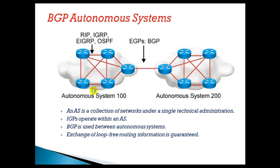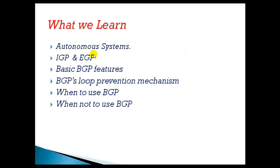Finally, we have seen some of the basic concepts of BGP. Initially we started with autonomous system numbers — a number which identifies an organization — then the basic differences between IGP and BGP, and some basic features. We also saw the loop prevention mechanism: whenever a route enters an AS, BGP checks if it sees its own AS number inside it and if so, does not install that route. Finally we covered when to use and when not to use BGP. In the next video we'll get into more detail about BGP configurations.